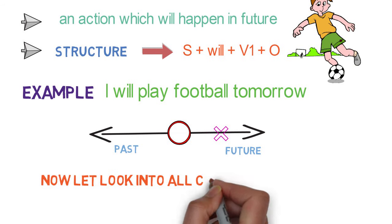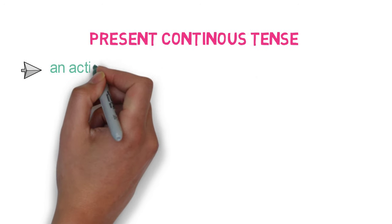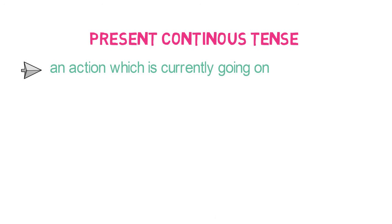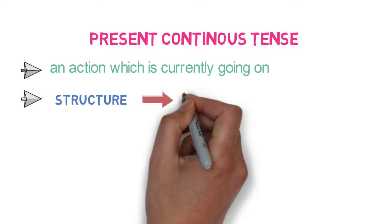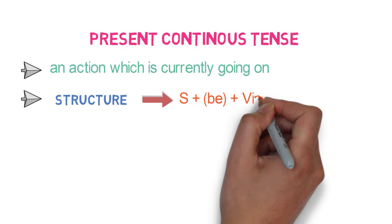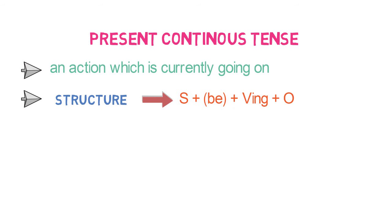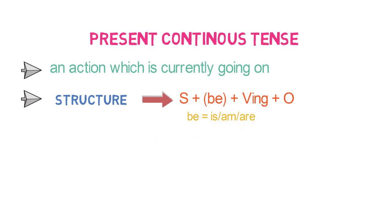Let's look into all the continuous tenses. Present continuous tense refers to an action which is currently going on — the event is still going on by the time we are referring to it. The structure is: subject plus be verb plus verb-ing form plus object. The be verbs here are is, am, and are, selected depending on first person, second person, and third person.